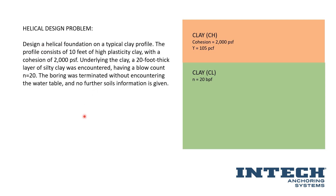We're going to design a helical foundation on a typical clay profile. The profile consists of 10 feet of high plasticity clay underlain by 20 feet of low plasticity or silty clay. We're going to have a cohesion of 2,000 PSF for the high plasticity clay with a density of 105 pounds per cubic foot. For the silty clay, we're going to have a blow count of 20 blows per foot. The boring was terminated at 30 feet, didn't encounter any water table, and we don't have any other soils information beyond or within this.